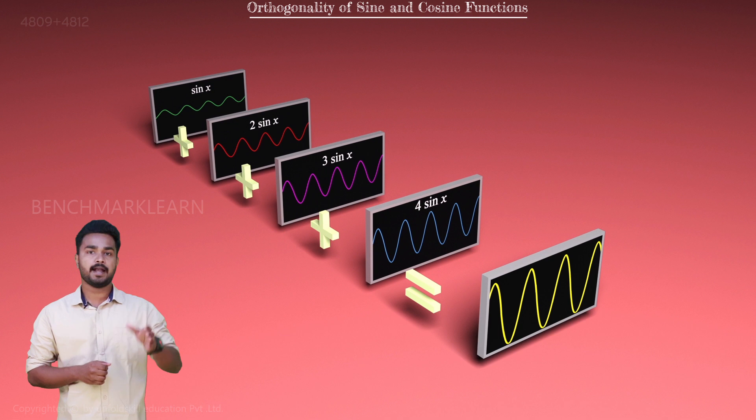So, adding up the same frequency sine wave generates a function similar to the sine function. But in Fourier series, our aim is to represent a new waveform using sine or cosine functions.